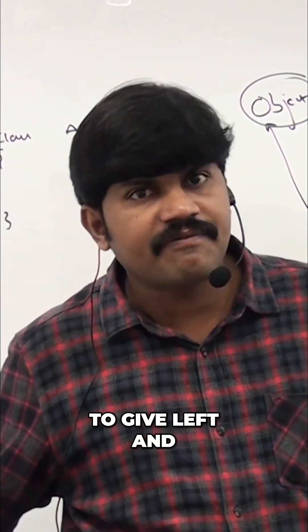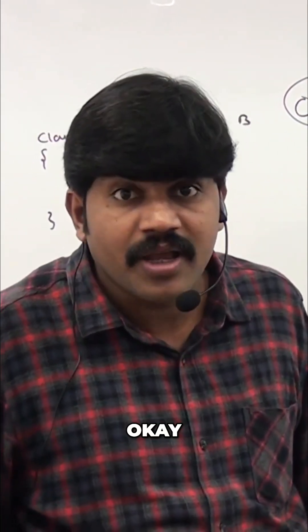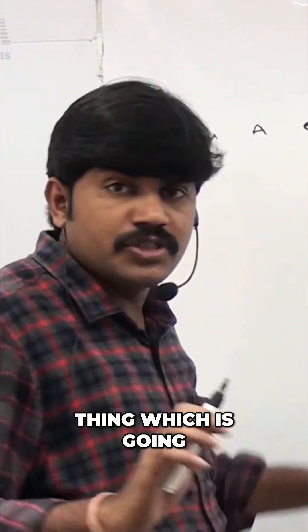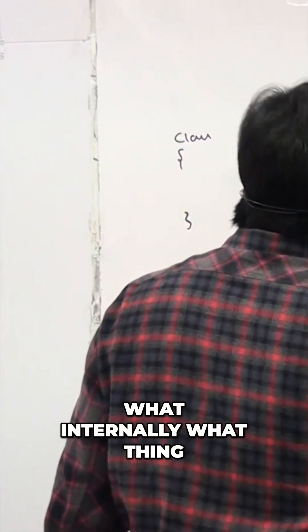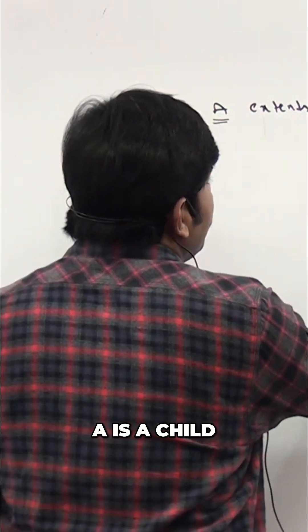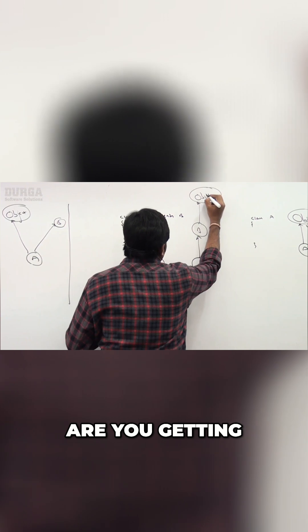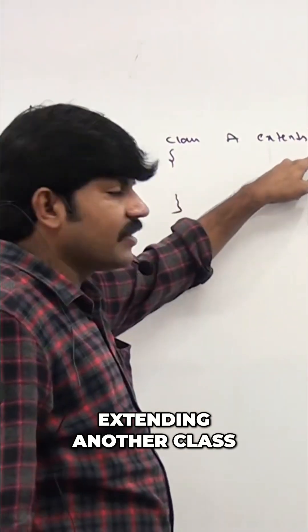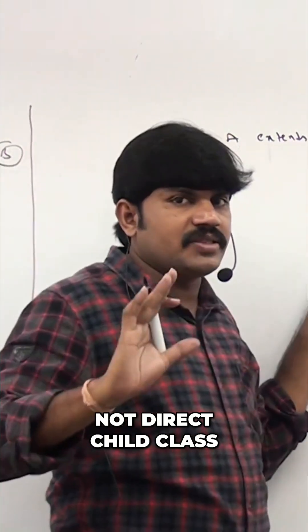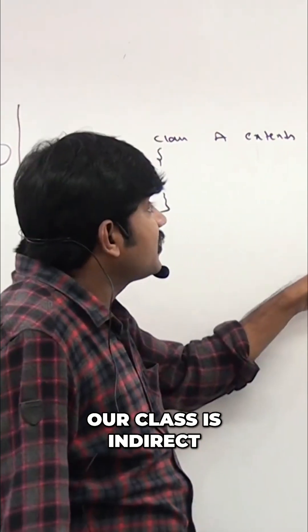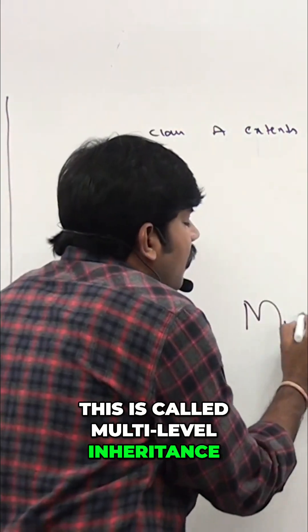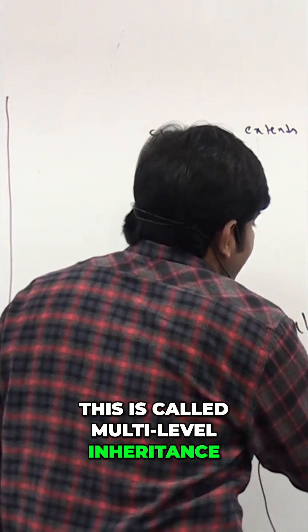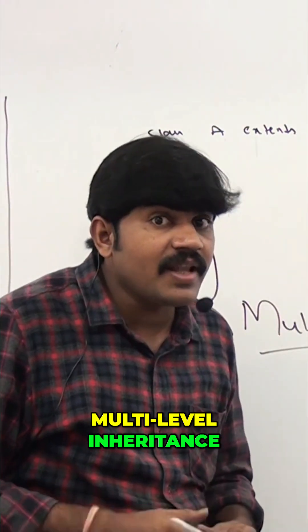First, you need to clarify this to the interviewer, because multiple inheritance is not what is happening here. Observe carefully: A is the child of B, and B is the child of Object. Whenever we extend another class, our class is not a direct child of Object — it is an indirect child of Object. This is called multi-level inheritance.